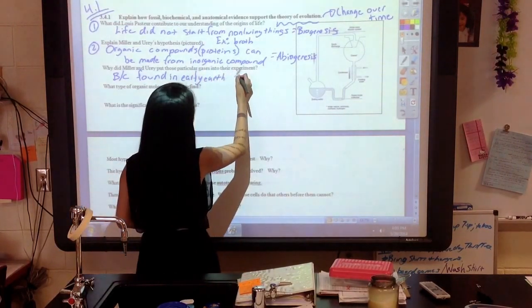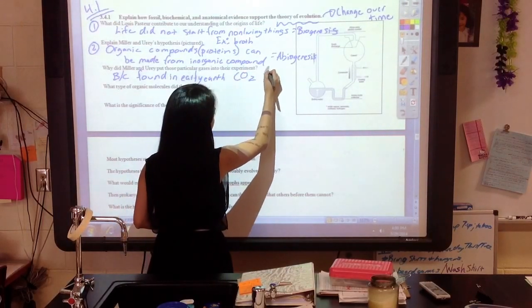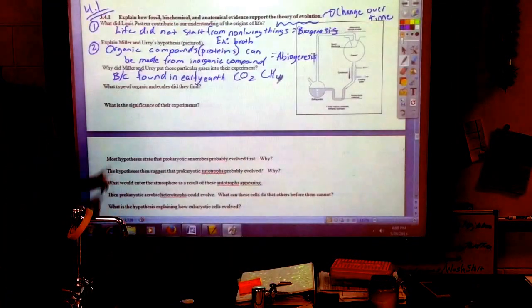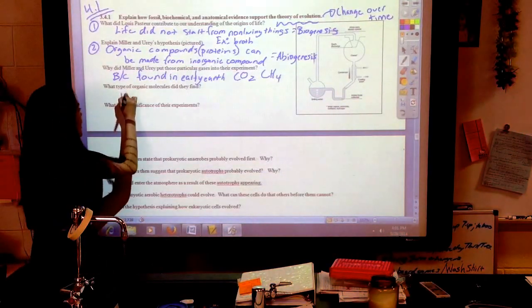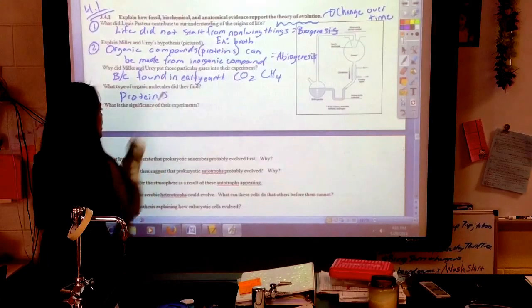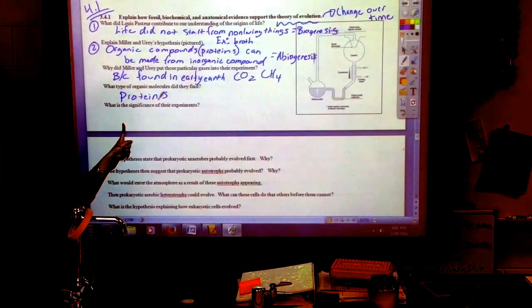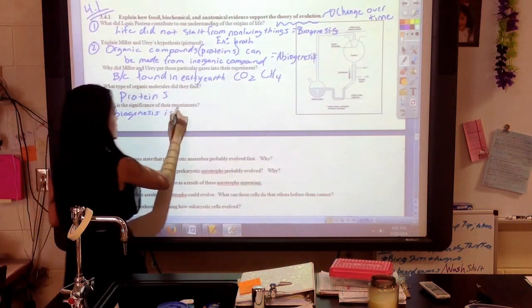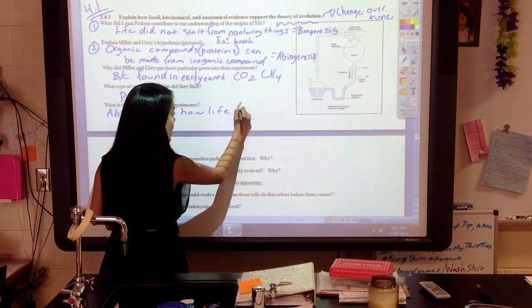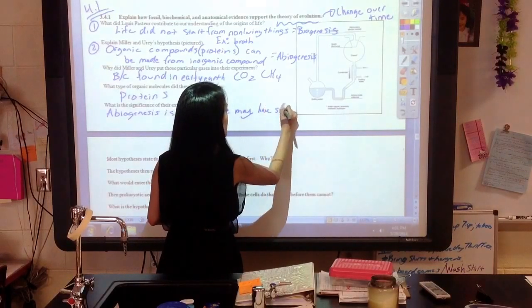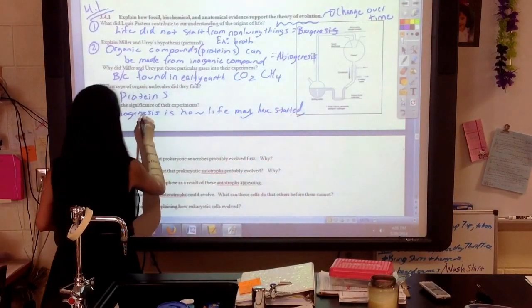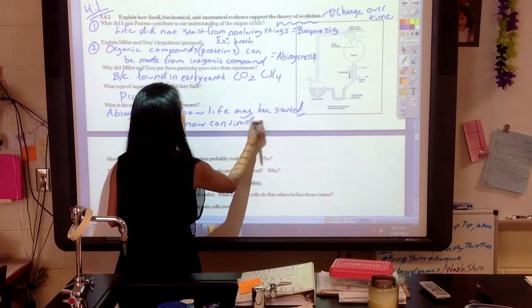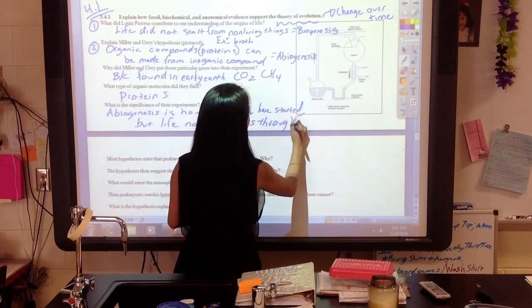And the next question, what type of organic molecules did they find? Mainly proteins. And what is the significance of their experiment? This was some evidence towards the theory of abiogenesis. It shows that abiogenesis is how life may have started, but life now continues through biogenesis.